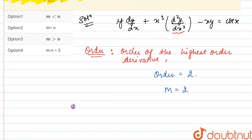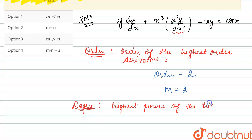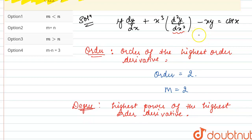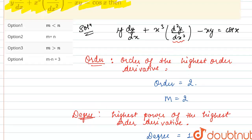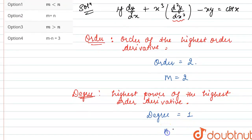Now we will find the degree of the differential equation. The degree of a differential equation is defined as the highest power of the highest order derivative present in the differential equation. Also, for degree to be defined, the differential equation should be a polynomial type in terms of derivatives. This is a polynomial type, so the degree is the highest power of the highest order derivative. The highest order derivative is d²y/dx² and its highest power present is 1, so the degree equals 1. Degree is n, so the value of n is equal to 1.